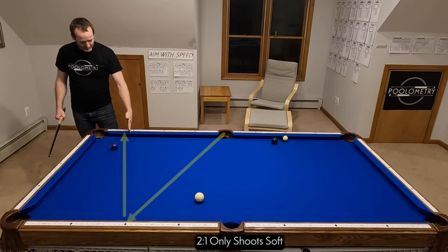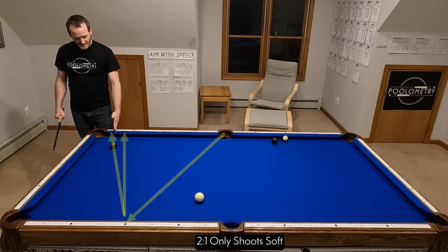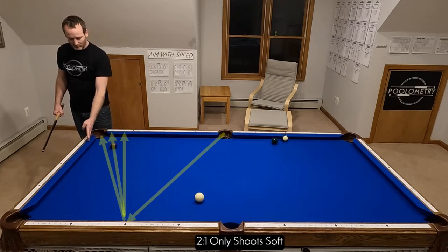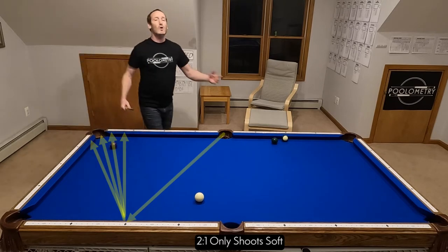When I shot hard, it almost came up to the first diamond. Medium speed comes here, soft comes about here, really soft I went into the end rail. What is going on?